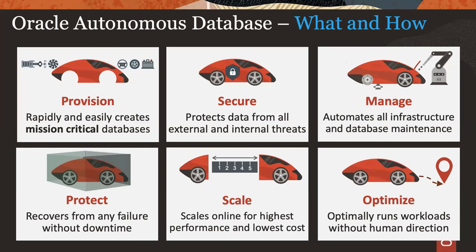The autonomous database is available in all of our data centers — last I checked, we're at 30-something data centers across the world. We recently added autonomous data guard, so you can have your autonomous database replicated across regions for disaster recovery. We have data guard for all of our database cloud services, allowing you to replicate that database service across any region — Phoenix to Ashburn, Tokyo to Frankfurt — you just set it up and we configure data guard for you.